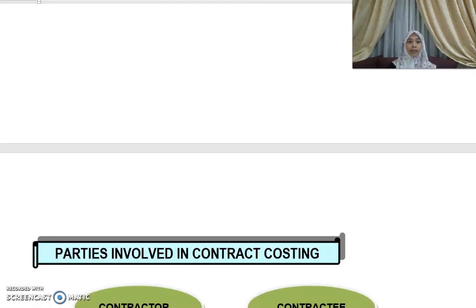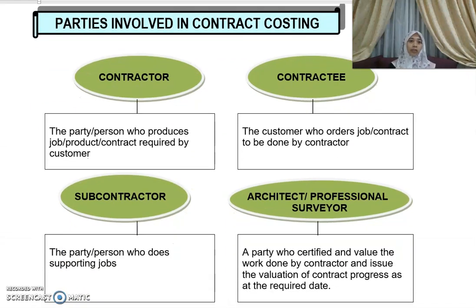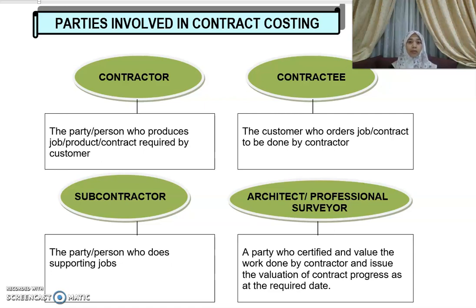Next, we look at the parties involved in contract costing. The contractor is the party or person who produces the job, product, or contract required by the customers. The contractee is basically the customer, while the contractor is the seller or producer. You may also have a subcontractor, who is the person doing the supporting work. Additionally, there is an architect or professional surveyor, who certifies and values the work done by the contractor and issues the valuation of contract progress at the required date.